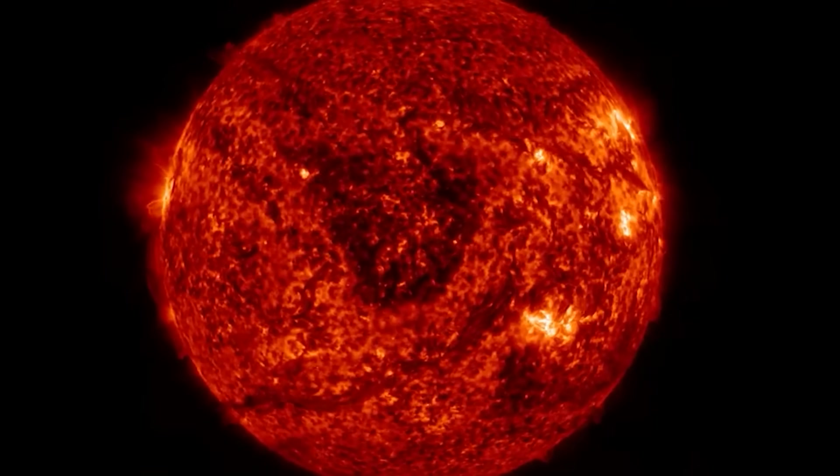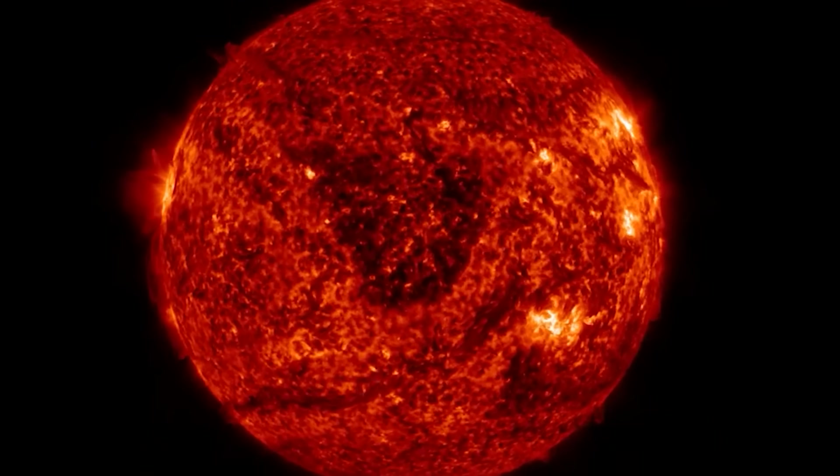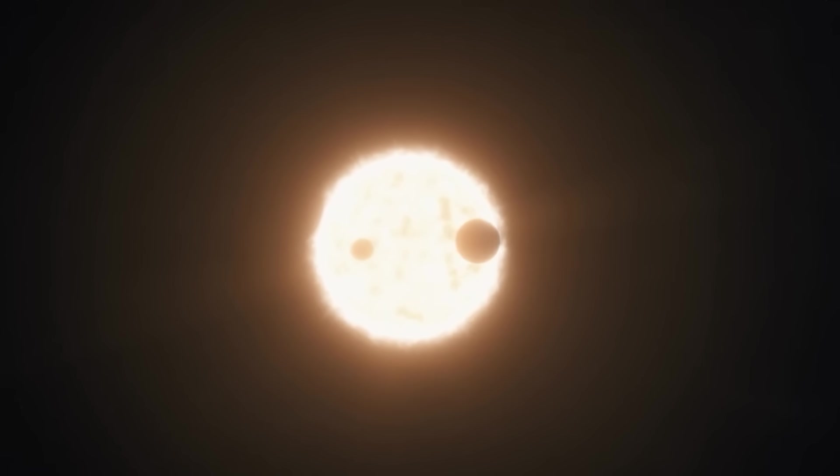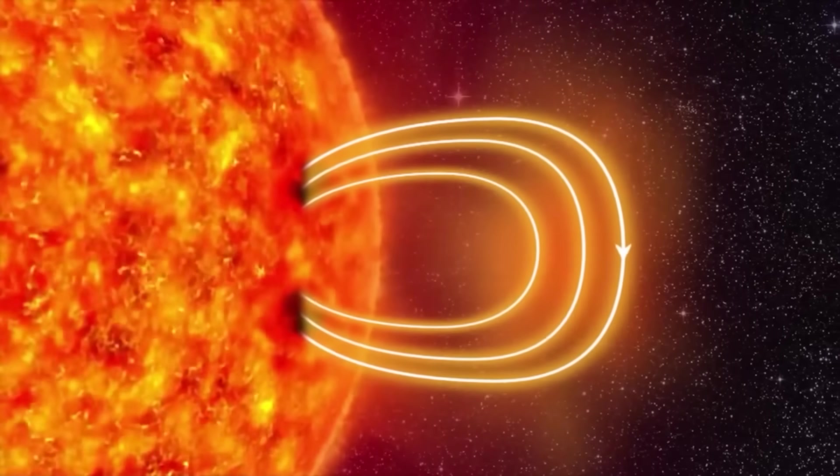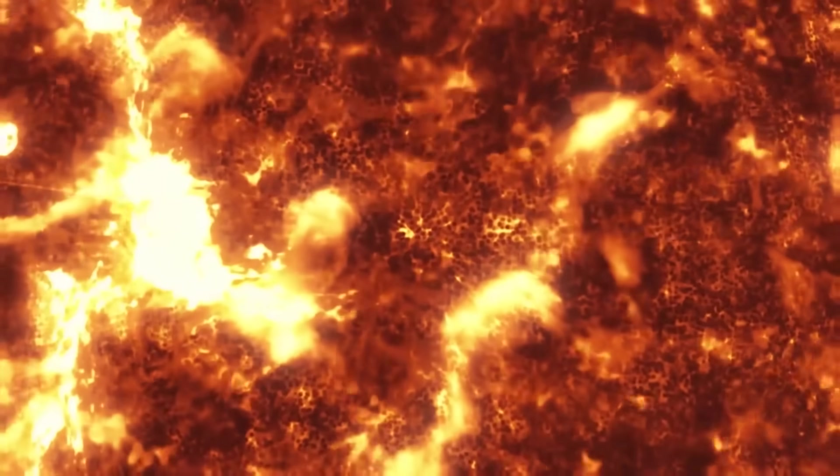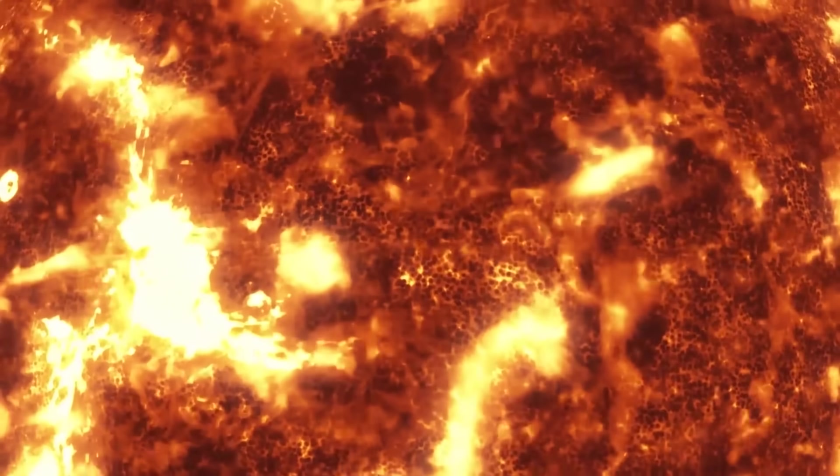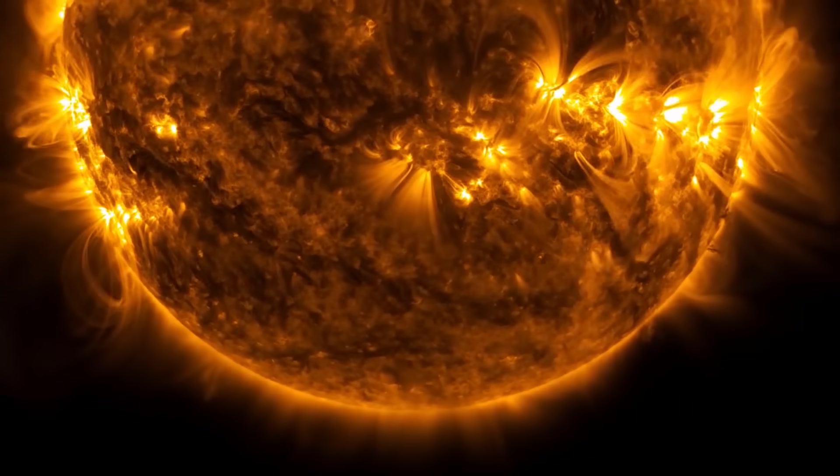Normally, coronal holes are a natural part of the Sun's activity cycle, usually forming near the Sun's poles and sometimes migrating towards the equator. They are areas where the Sun's magnetic field lines extend far out into space, rather than looping back down to the surface. This allows high-speed solar wind to escape more easily.